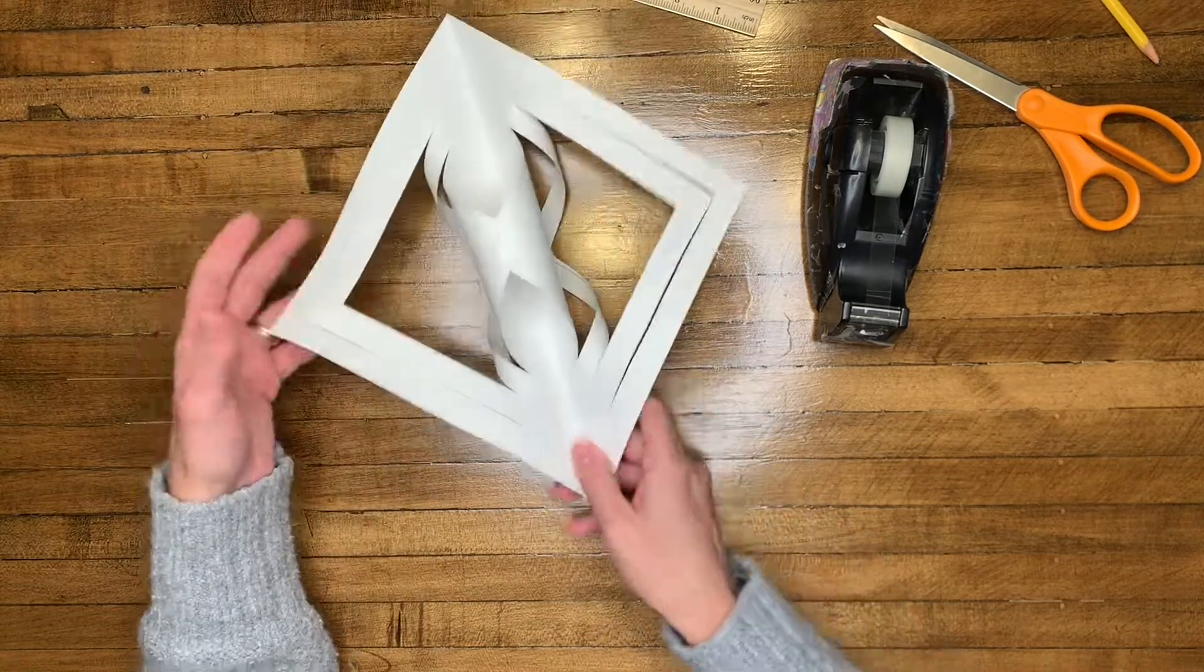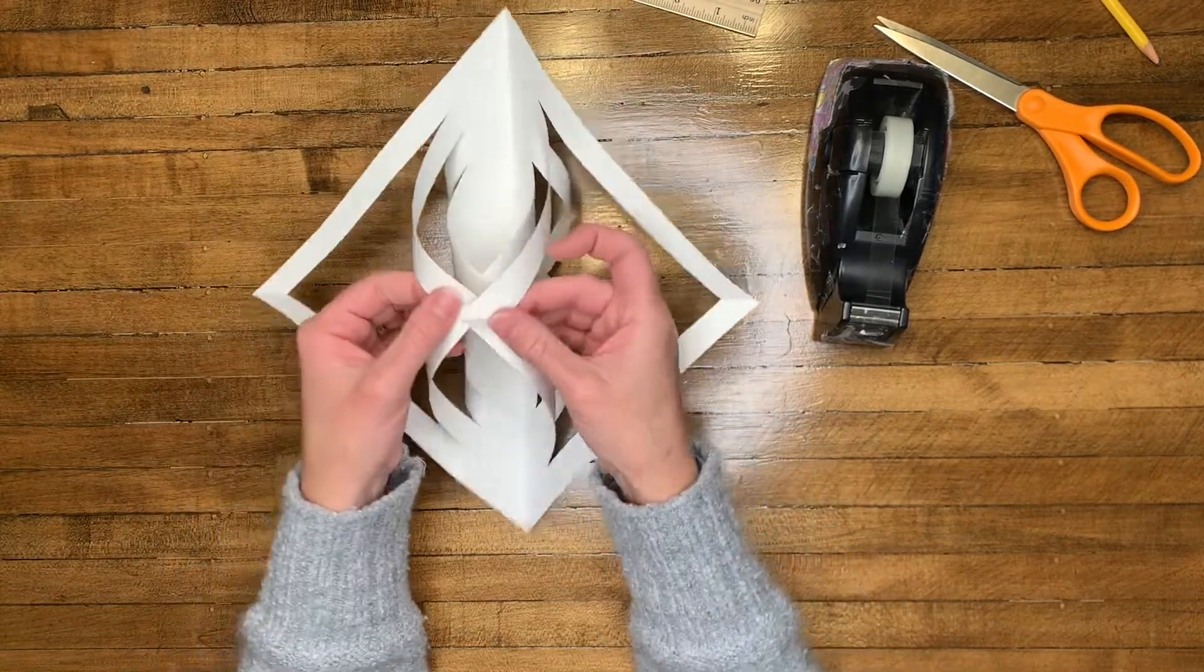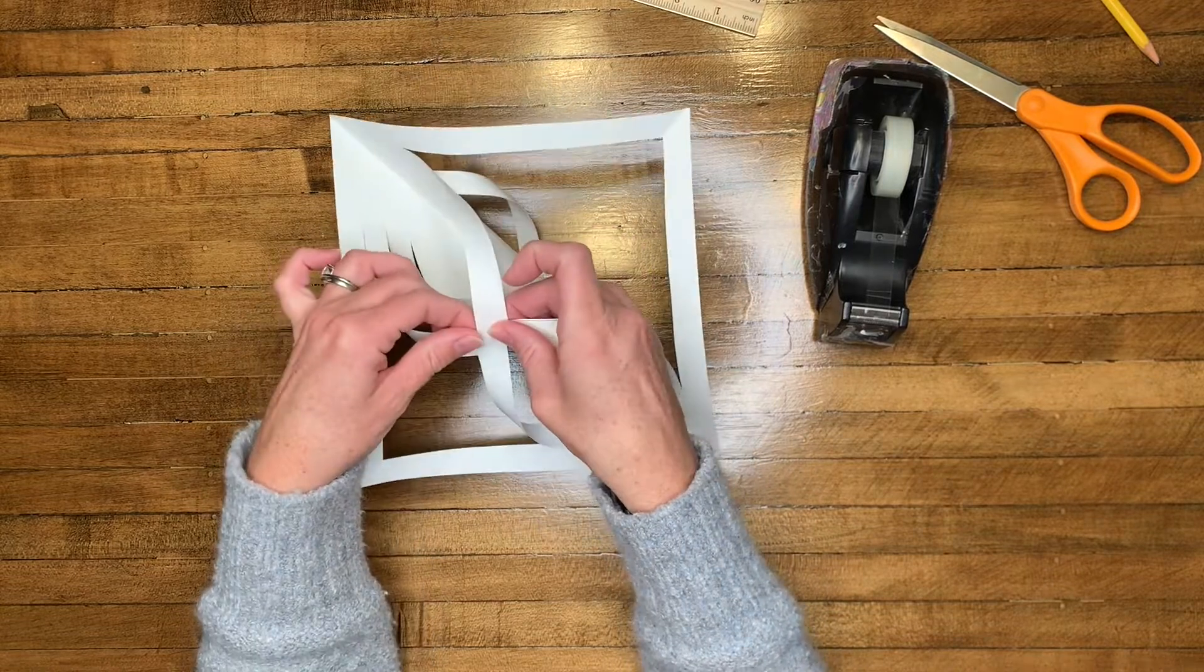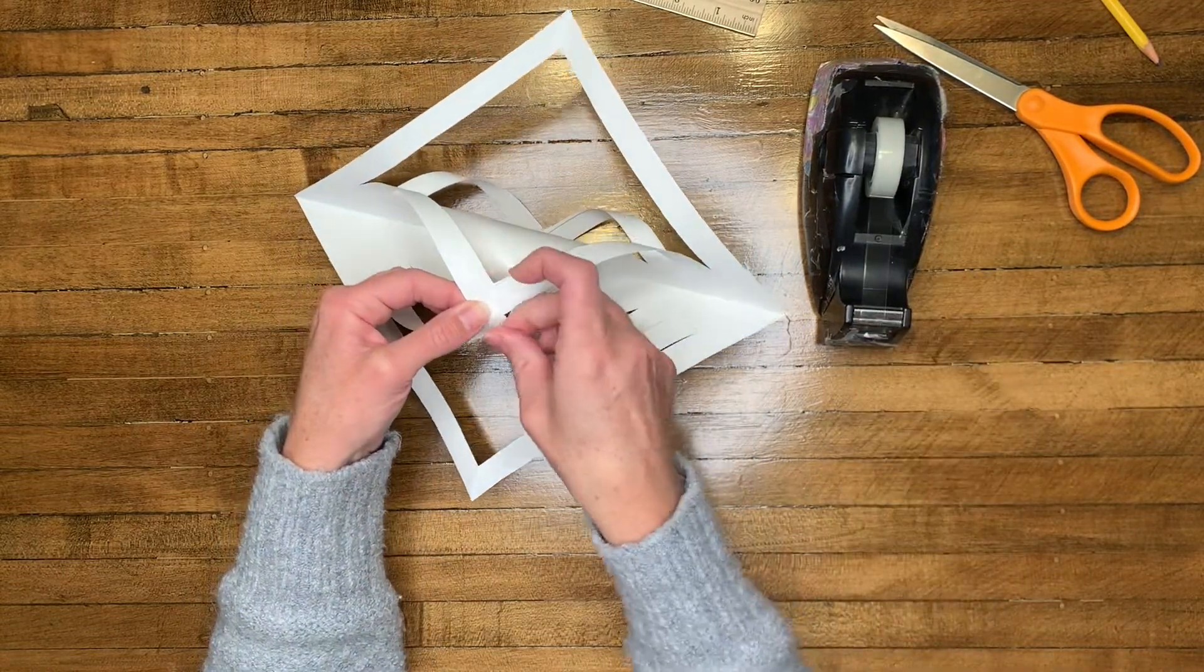Then you're going to flip over your sculpture again and do the same thing. Make sure those points are overlapping and then tape them together.